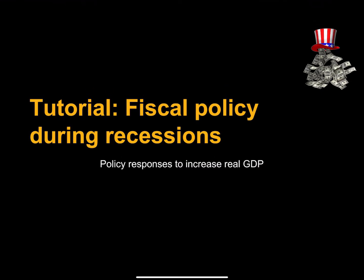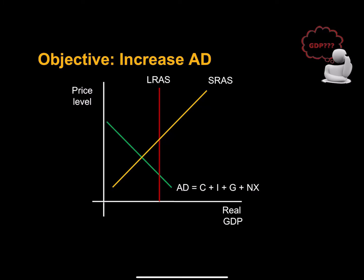I'd like to talk to you today about fiscal policy during recessions. Let's suppose the economy is in recession — that means real GDP is below potential. One option is to just wait for whatever shock this was to pass, wait for the automatic adjustment mechanisms to kick in, and the economy will eventually return to potential.